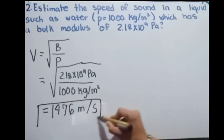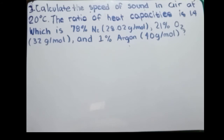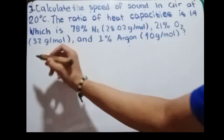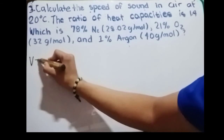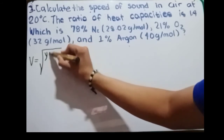That's the speed of sound in water, and that is only an estimation. Now we are going to calculate the speed of sound in air. The given problem: calculate the speed of sound in air at 20 degrees Celsius. The ratio of heat capacities is 1.4, and air is composed of 78% nitrogen gas. The speed of sound in air is equal to the square root of gamma times R, the ideal gas constant, times temperature, all over its average molar mass.